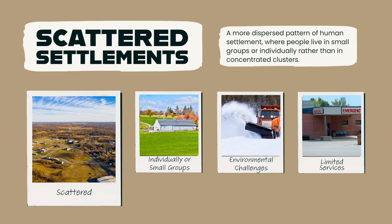Pattern number two is scattered settlement. Scattered settlement refers to a more dispersed pattern of human settlement, where people live in small groups or individually rather than in concentrated clusters. Scattered settlement patterns are often found in areas with limited resources or challenging environmental conditions, and can present challenges in terms of access to services and opportunities.